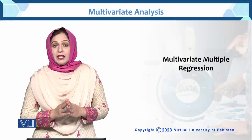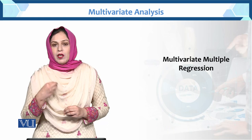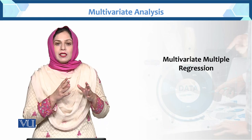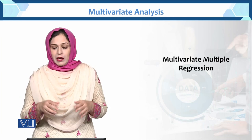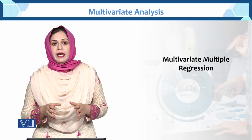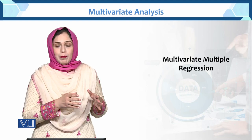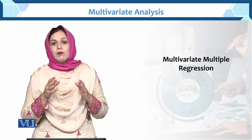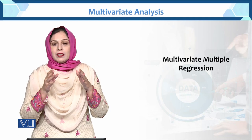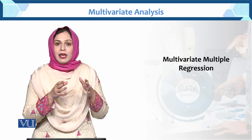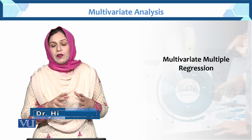This is the multivariate multiple regression. In multiple regression, we previously saw one dependent and more than two independent variables. Now in multivariate multiple regression, we have more than one dependent variable and more than one independent variable. So in multivariate regression, the dependent variable can also be more than one.